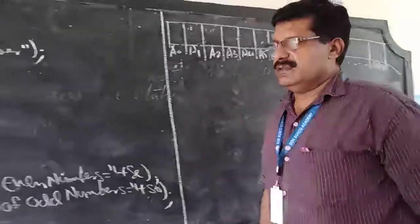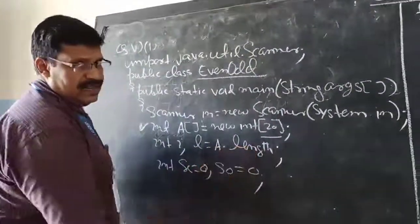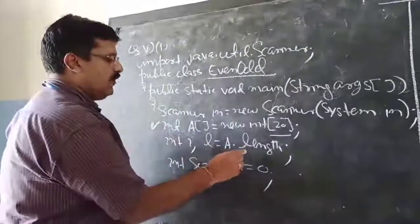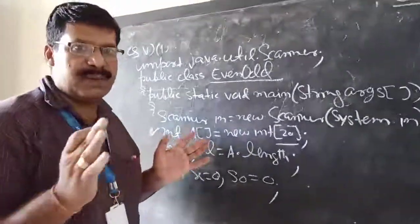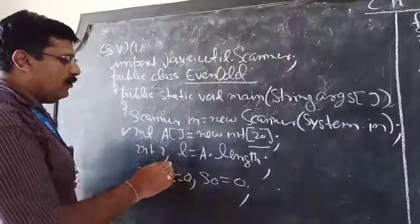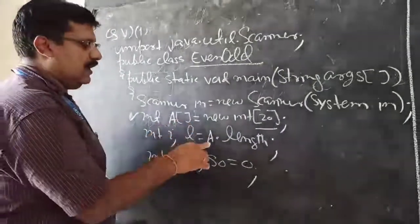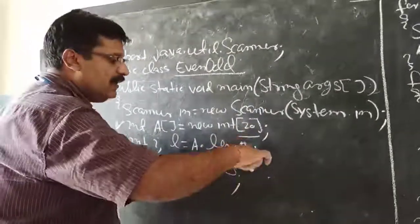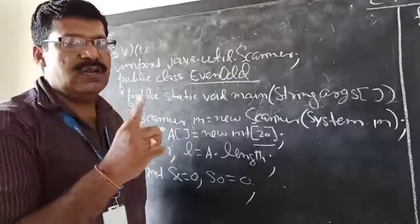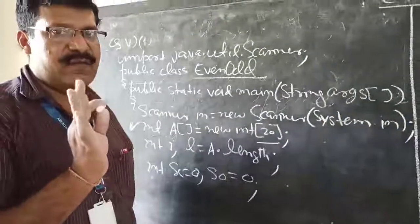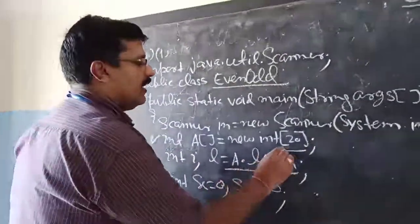Next, we declare an int variable: int l = a.length. I have already taught you the length function — it is used to find the length of the actual array, counting how many elements are there. You write the array name followed by dot length, without brackets. If you put brackets after length, it finds the length of a String, not an array. So just write the array name dot length, and the length of this array will be 20.